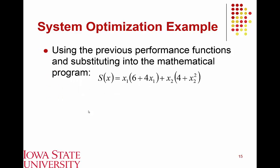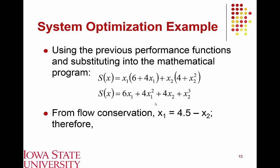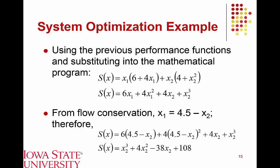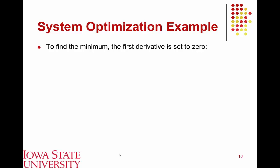Returning to the prior example, the system travel time equals X1·T1(X1) + X2·T2(X2), using the performance functions established previously. Expanding this expression gives one equation with two unknowns. We again substitute X1 = 4.5 − X2 from conservation of flow, yielding total system travel time as a function of X2 alone. To minimize this, we take the first derivative with respect to X2 and set it equal to zero.